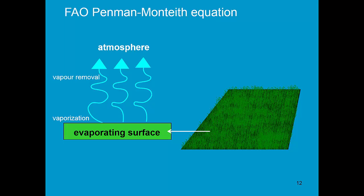Well watered, well fertilized, no pests, no diseases. Since there is not only one grass crop, FAO introduced a hypothetical grass crop with well-defined characteristics, so that it can be applied all over the world.